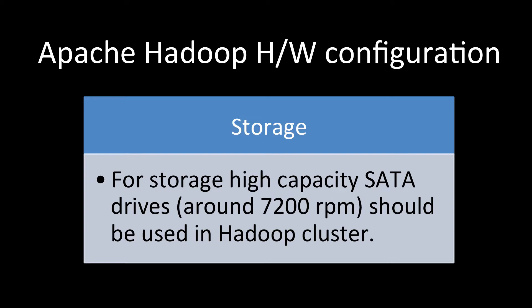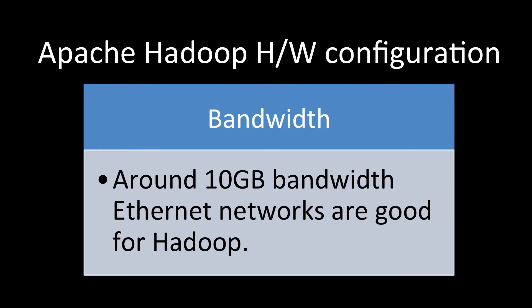For storage, high-capacity SATA drives are recommended, generally running at 7200 RPM. These are good enough drives that can store data quickly. You should not go below 7200 RPM, and these drives are quite common and easy to obtain for use in a Hadoop cluster.